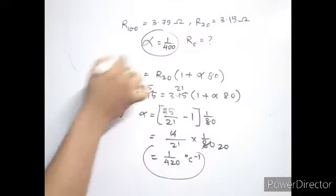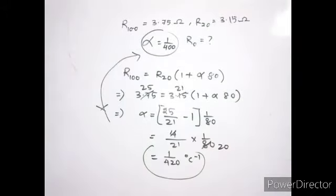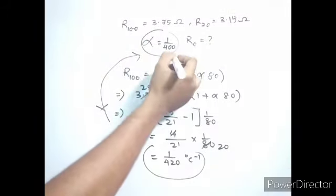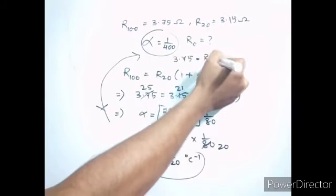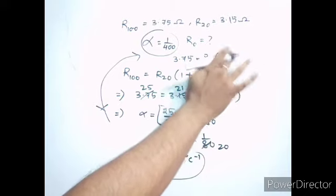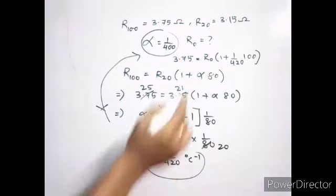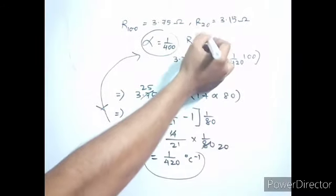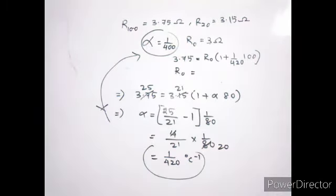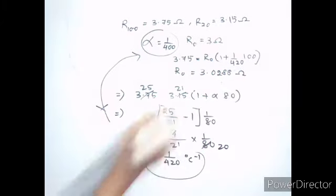Let's check if this new alpha gives the correct R₀. Substituting into R at 100 equals R₀ times 1 plus 1 by 420 times 100, and solving for R₀, we get approximately 3.000288 ohms — different from the 3 ohms we had initially obtained.